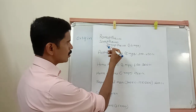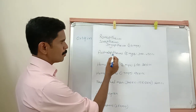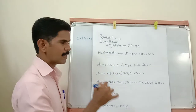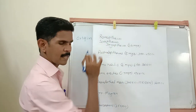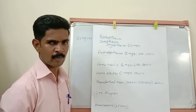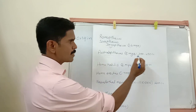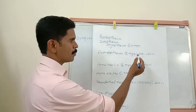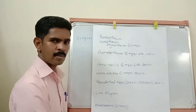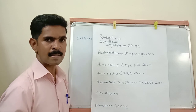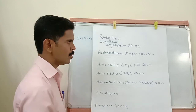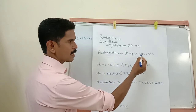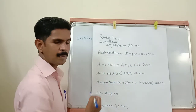Next to Dryapithecus is Australopithecus. These ancestors were lived in the world 5 million years ago. Their brain capacity is 350 to 450 cc — this is a very important one-mark question.